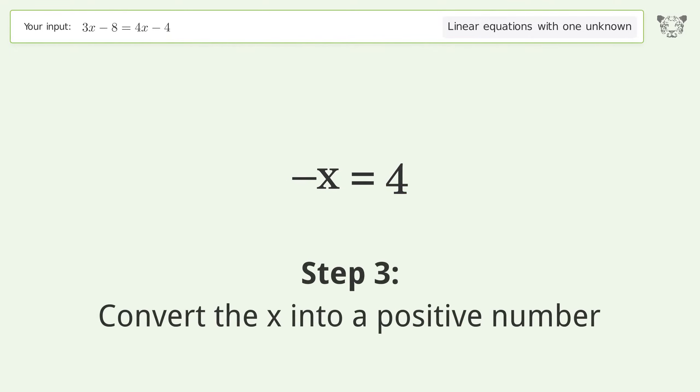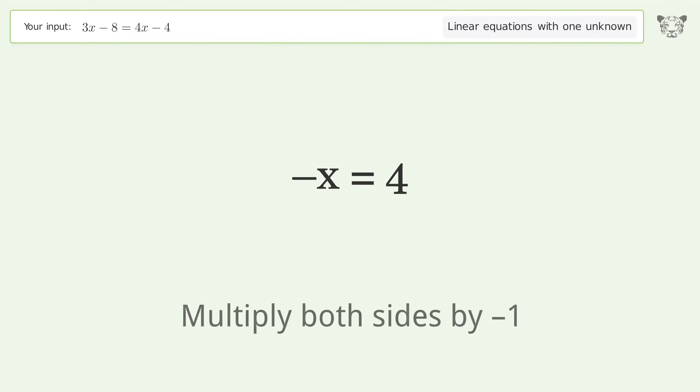Convert the x into a positive number. Multiply both sides by negative 1. Remove the 1s. Simplify the arithmetic.